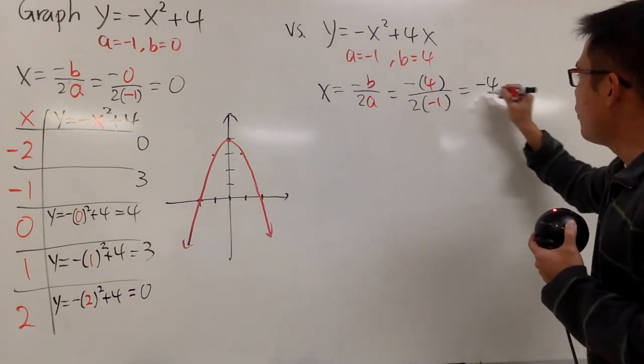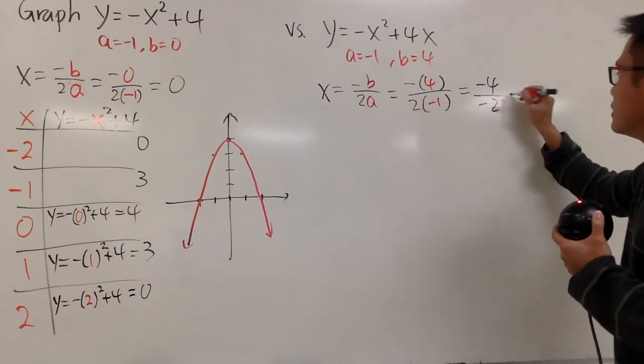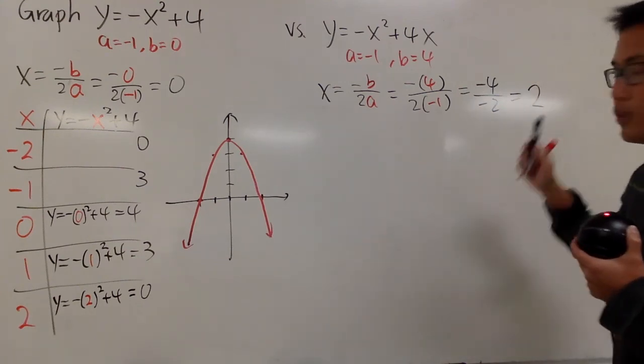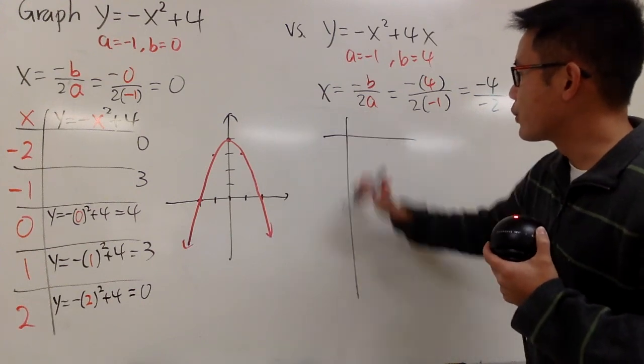And now let's work this out. On the top is negative 4. On the bottom, 2 times negative 1 is negative 2. So you get, all together, positive 2. And in this case, we have to put the 2 right in the middle of our chart. So let's do that real quick as well.